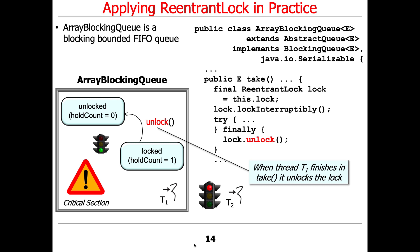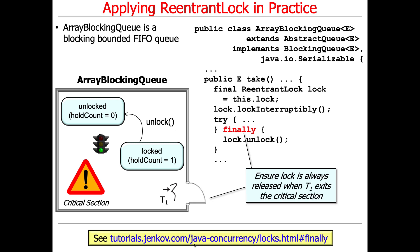When T1 is finished — assuming an item has been put in the queue and we return that item — we unlock the lock on the way out. T2 is still blocked at this point. Unlocking decrements the hold count from one back to zero, which releases the lock and allows T1 to exit the critical section. We use a try-finally block to ensure the lock is always released.